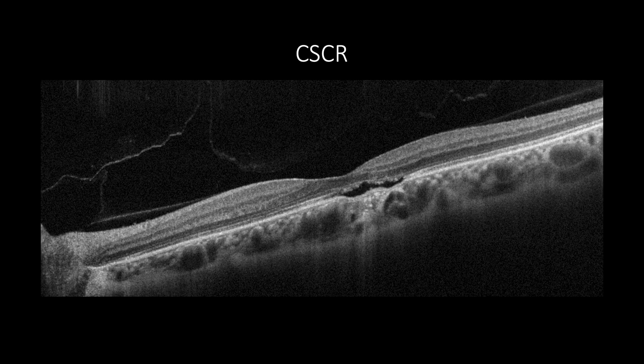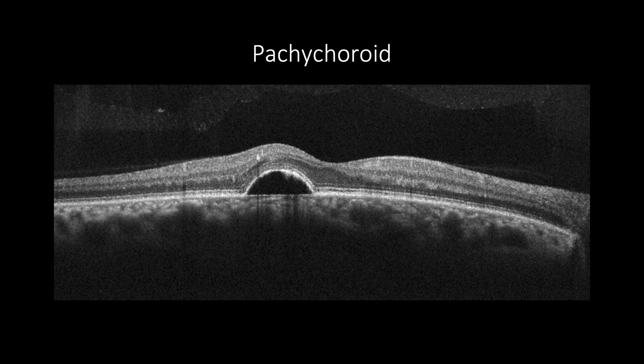This cross section shows focal choroidal excavation, which features a hyperreflective subretinal space with increased choroidal thickness and dilated Haller's. Sometimes pachychoroid can be presented with pigment epithelial detachment only, with no subretinal fluids or intraretinal changes. Such cases may warrant only follow-up with no need for treatment.